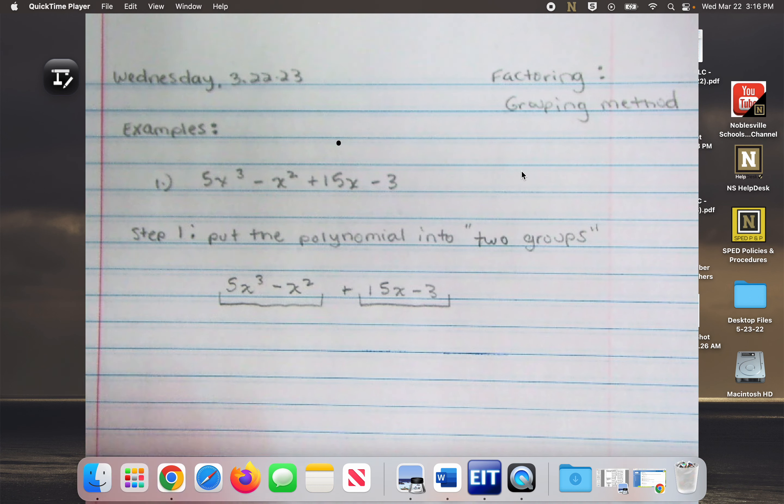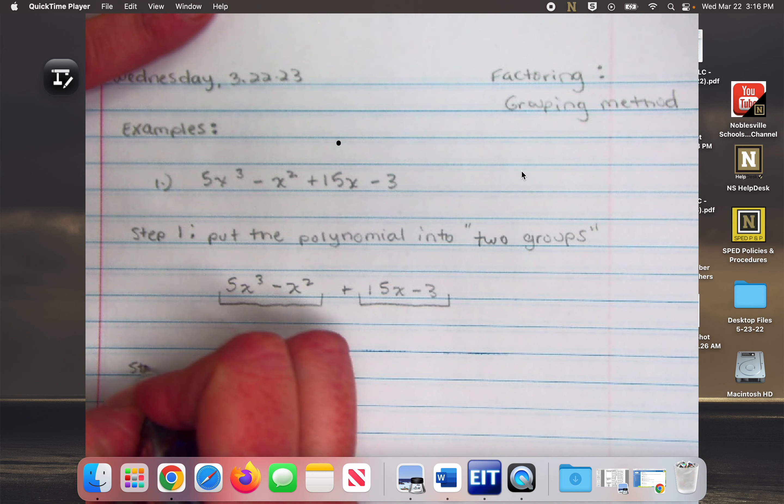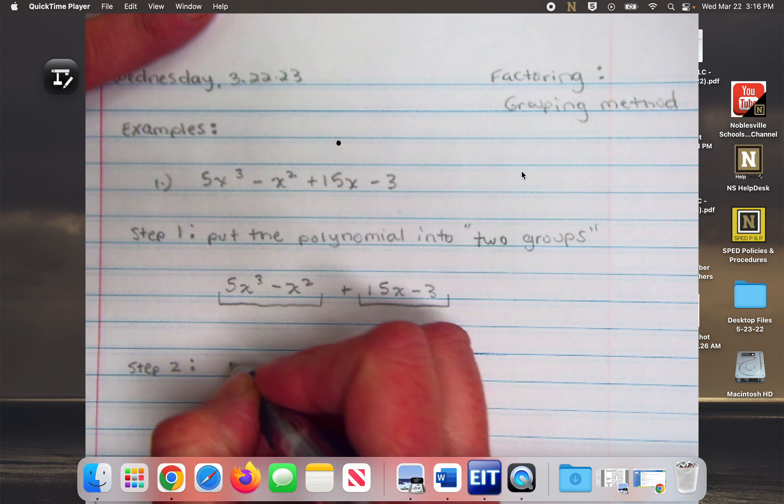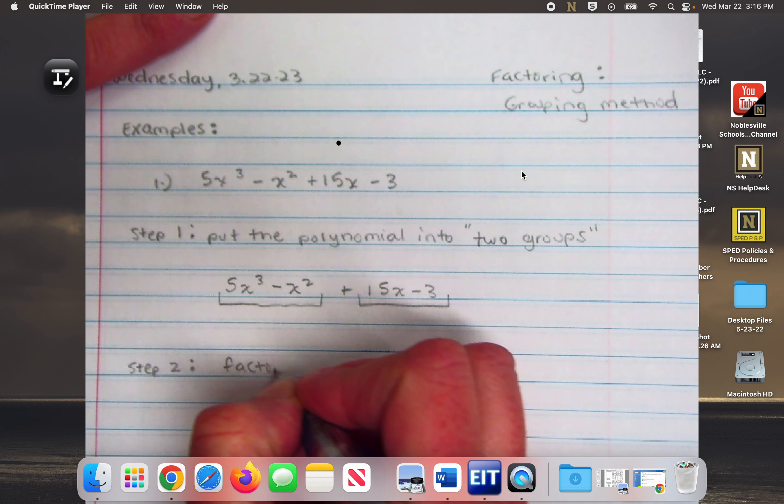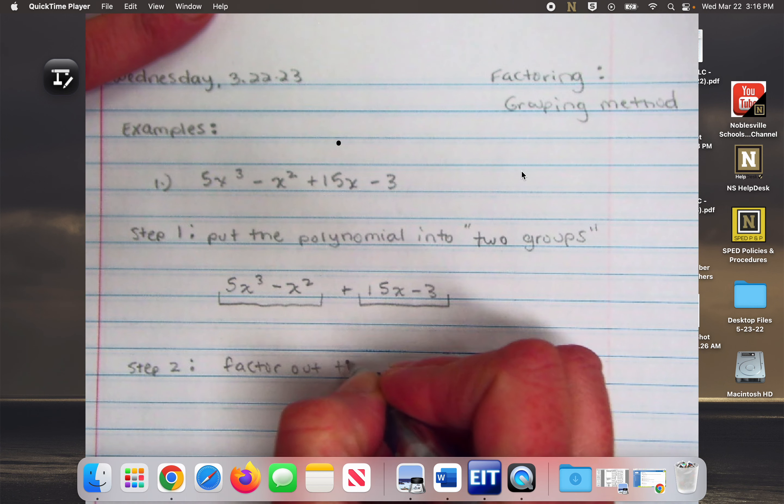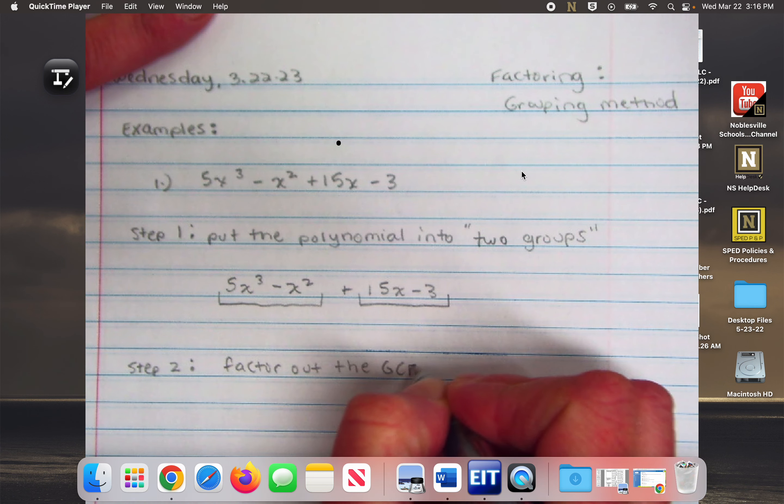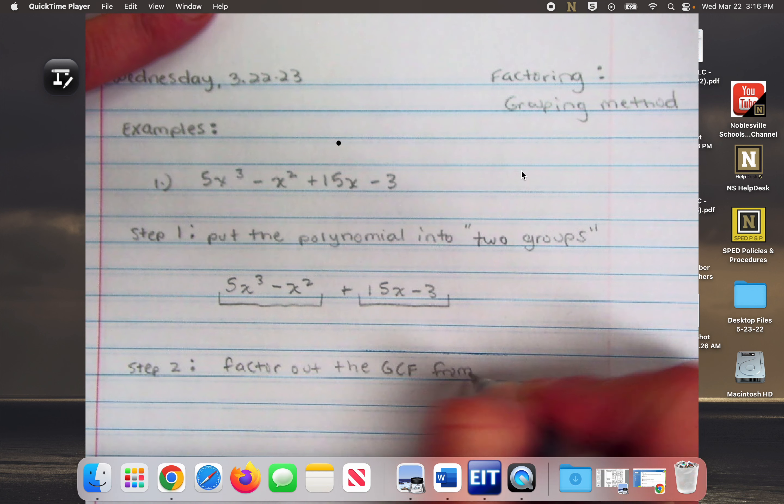And then the second step is to factor out the GCF from each group.